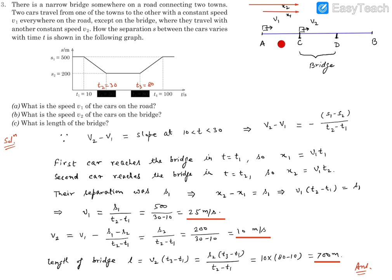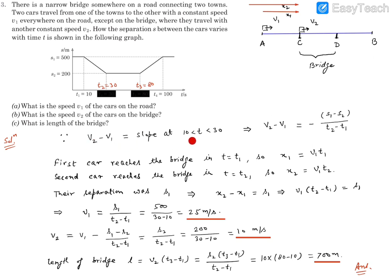Let's visualize this situation. This is town A from where the cars start, and town B where they are heading. In between is the bridge. From T1 to T2, there is relative motion in which one car is moving on the bridge and the other car is moving on the road. The average speed can be calculated using the slope, so V2 minus V1 is going to be the average relative velocity.